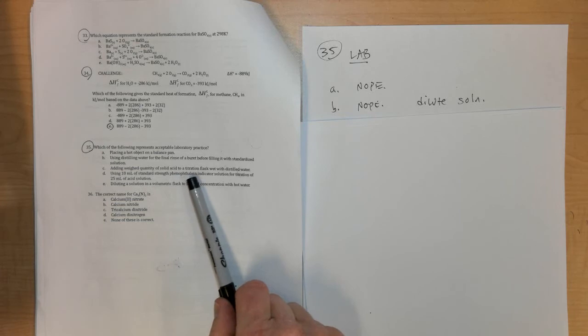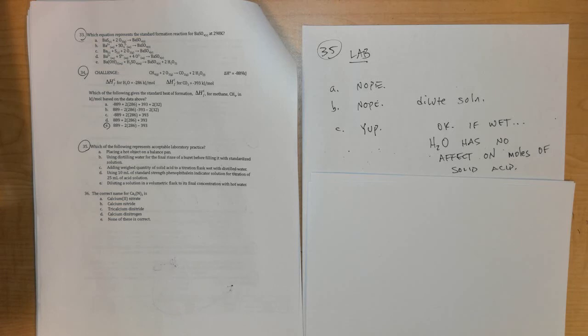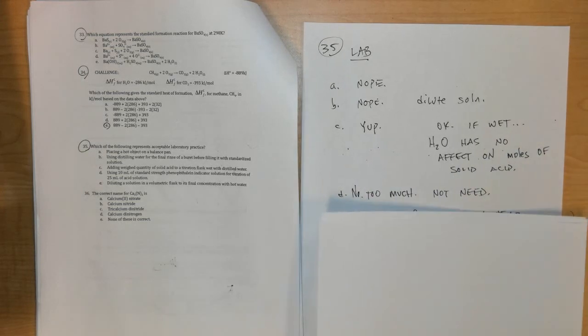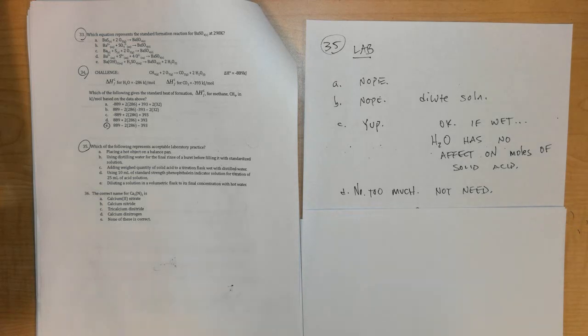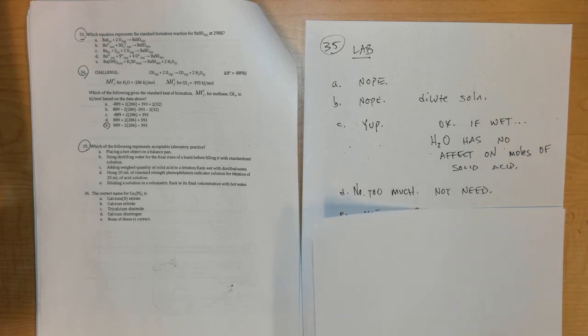Adding a weighed quantity of solid acid to a titration flask wet with distilled water - this is okay because the water that's inside the flask will not have any effect on the moles of the solid acid. When you're doing a titration what you're concerned about is the moles of acid and the moles of base, or moles of one substance and moles of another unlike substance, like an oxidizing agent and a reducing agent, like an acid and a base. So this is okay because the water in there, the H2O, doesn't affect the moles of the acid. Number D: use 10 milliliters of phenolphthalein for a titration of 25 milliliters of acid solution - that's too much, all you need is a few drops.